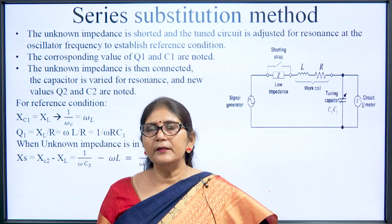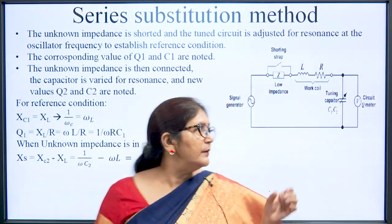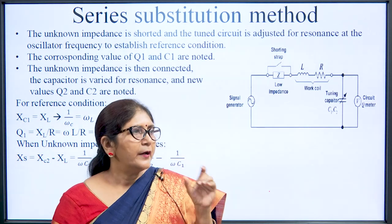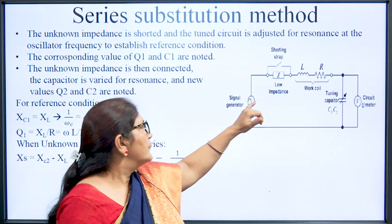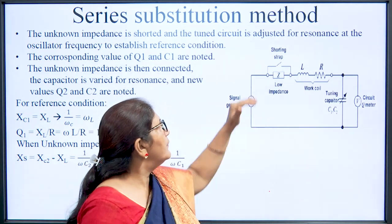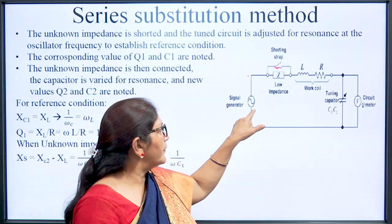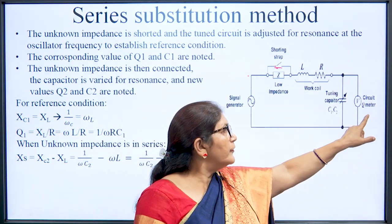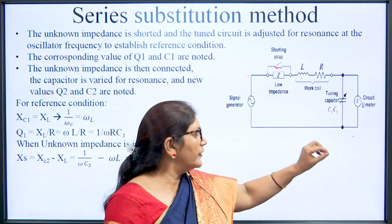In the series substitution method, the unknown impedance is placed between two terminals with a working coil, connected in series with the capacitor and signal generator. First, we short the unknown component using a shorting strap, then vary the frequency of the signal generator. When the Q meter shows maximum value, the circuit is at resonance, and we note down the value of capacitance C1.